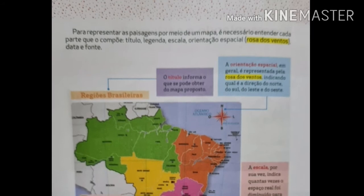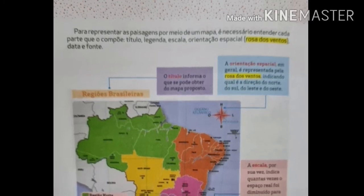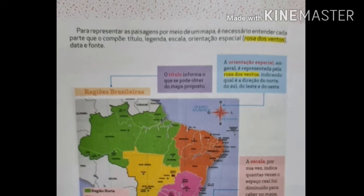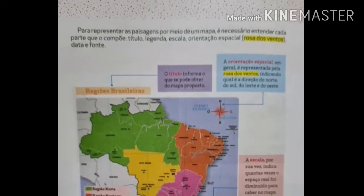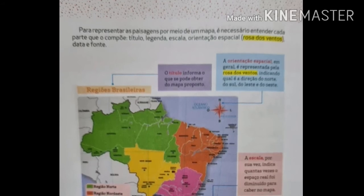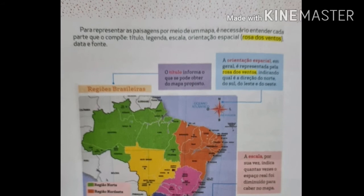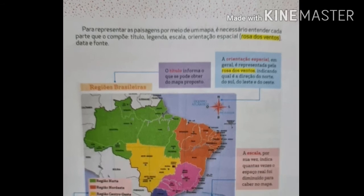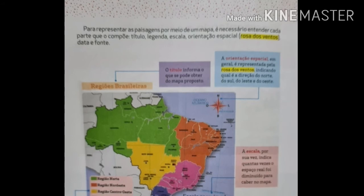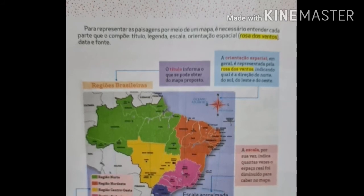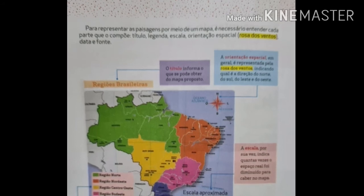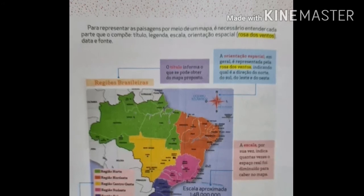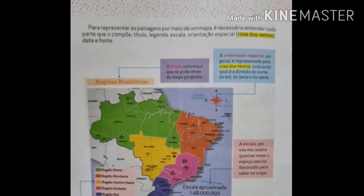Temos também a legenda, que é muito importante, porque indica por meio de cores, sinais ou preenchimento diferentes dados sobre os mapas. Por exemplo, o mapa climático do Brasil tem cada tipo de clima representado por uma cor diferente. A legenda é o componente que indica o que cada cor representa. Veja aí no mapa: o verde para a região norte, o vermelho para a região nordeste, o amarelo para a região centro-oeste, o rosa para a região sudeste e o azul para a região sul.